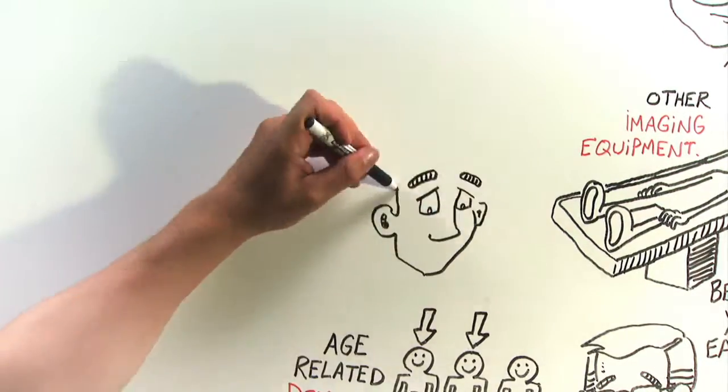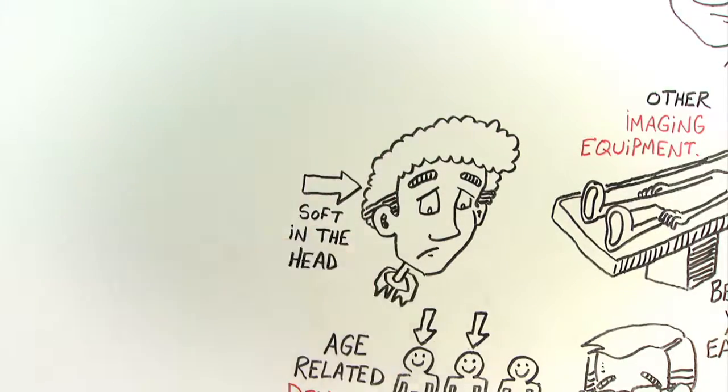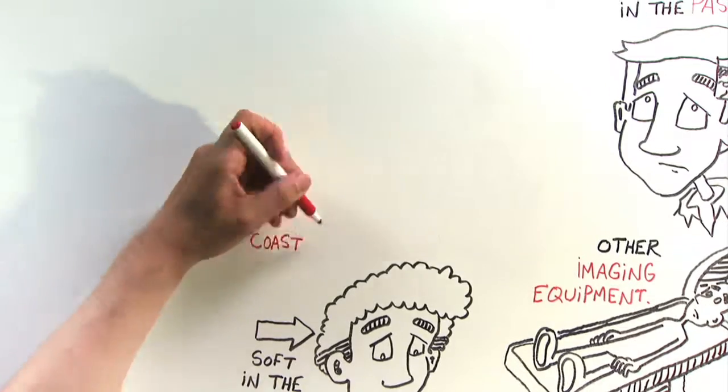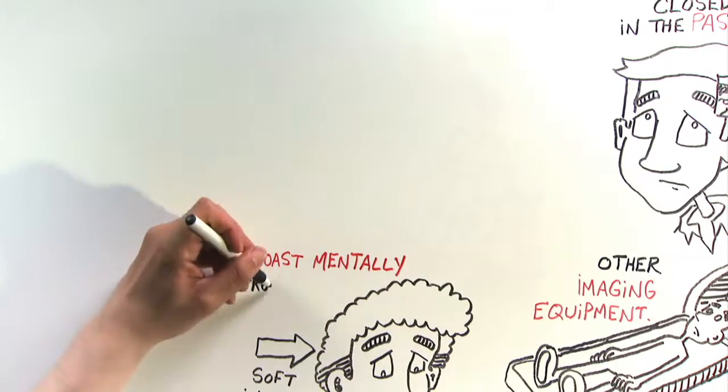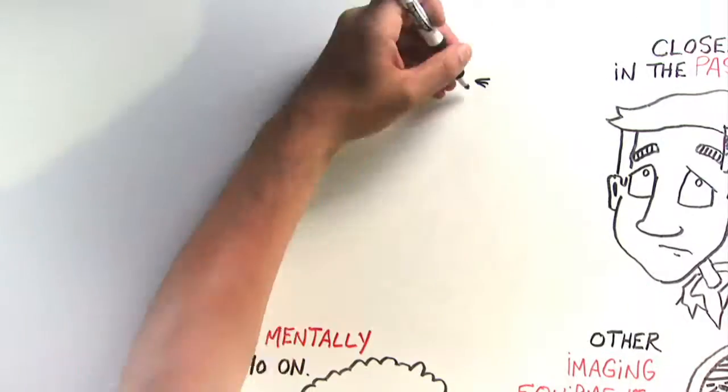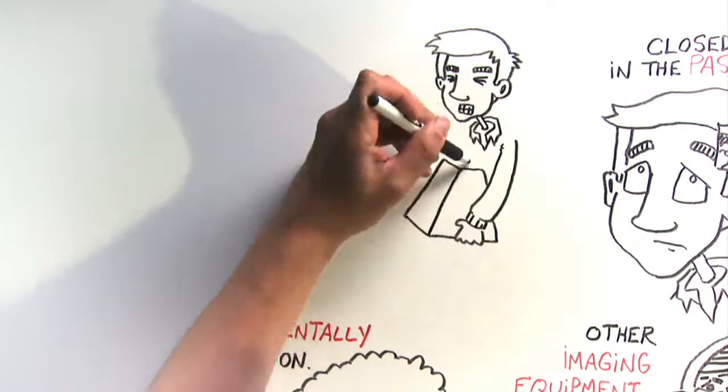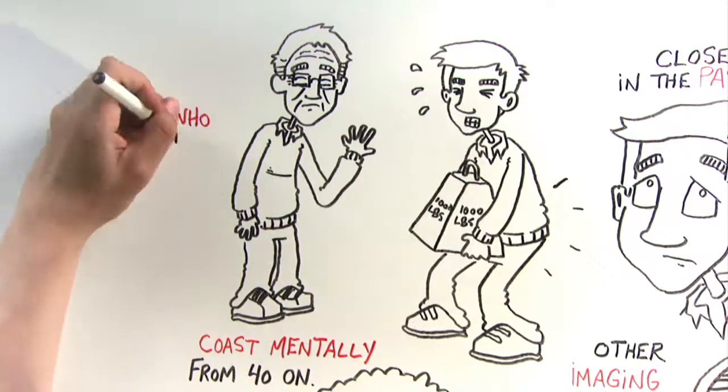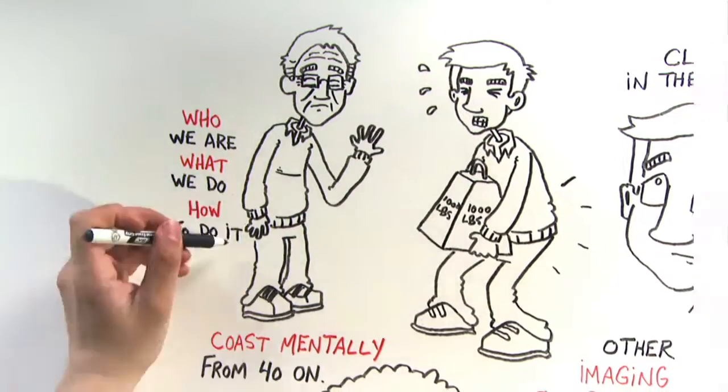In other words, far too many of us are going soft in the head. This happens because many of us start to coast mentally from about the age of 40 on. We stop the heavy lifting that we did to arrive at 40 because we can. We figured out who we are, what we do, and how to do it.